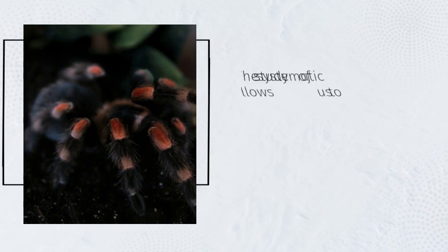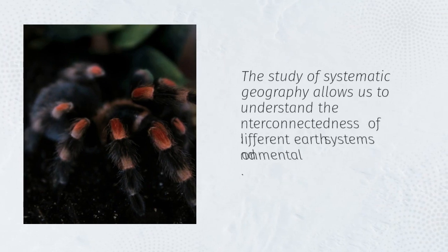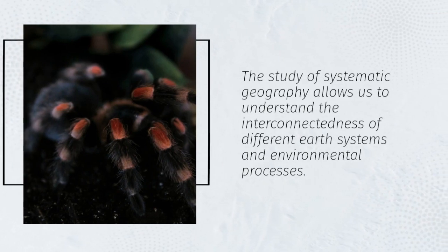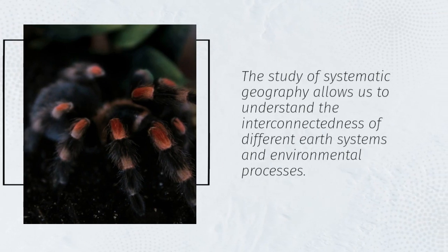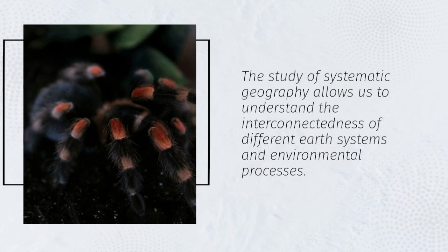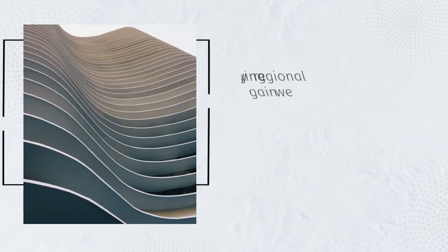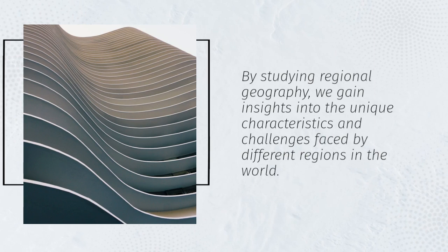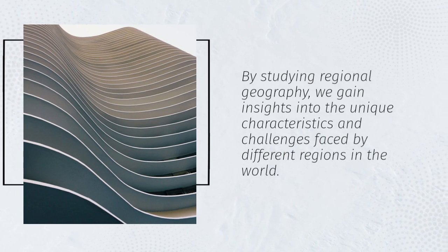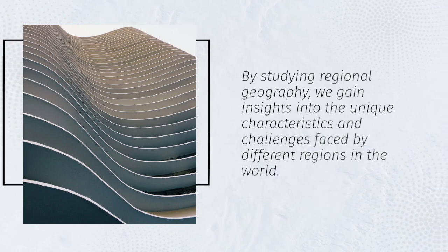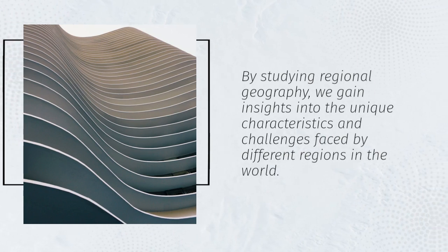The study of systematic geography allows us to understand the interconnectedness of different earth systems and environmental processes. By studying regional geography, we gain insights into the unique characteristics and challenges faced by different regions in the world.